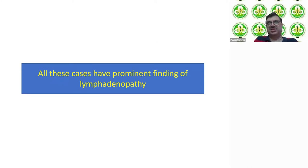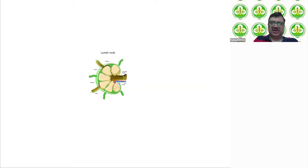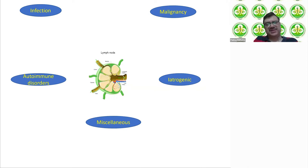Lymphadenopathy is not a disease in itself — it is like fever where you have to find the cause. When you look at the causes of lymph node enlargement, you can broadly divide them into five groups: infective, malignancy, autoimmune disorders, iatrogenic, and miscellaneous. Once you are taking the history and doing the examination, you have to try to fit the lymphadenopathy into these broad categories.